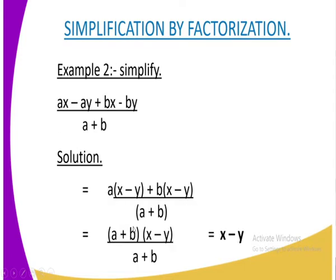We have got Example 2. We are also required to simplify ax - ay + bx - by all divided by a + b. On the solution, what you are going to do on the first part, as you can see, a is common, so we get a outside. Then we are going to remain with x - y plus b is common on our second phase. So we are going to have x - y all divided by a + b.